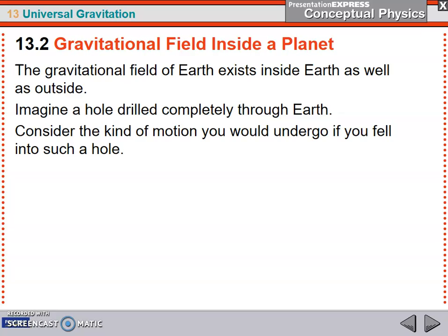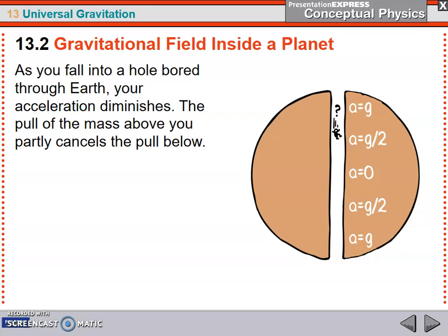The gravitational field of Earth exists inside Earth as well as outside. Imagine a hole drilled completely through the Earth. Consider the kind of motion you would undergo if you fell into such a hole. First thing we have to do is drill a hole. The second thing we have to do is take out all the air. There's no air in this hole.